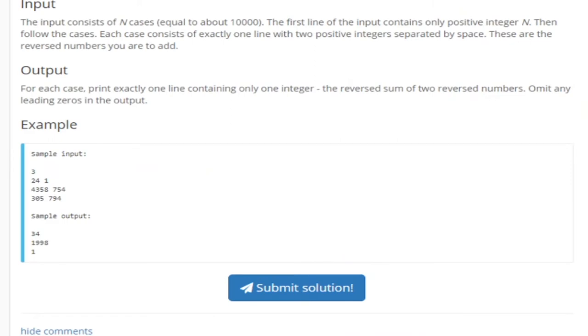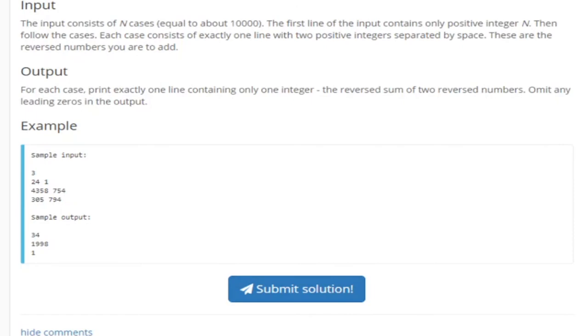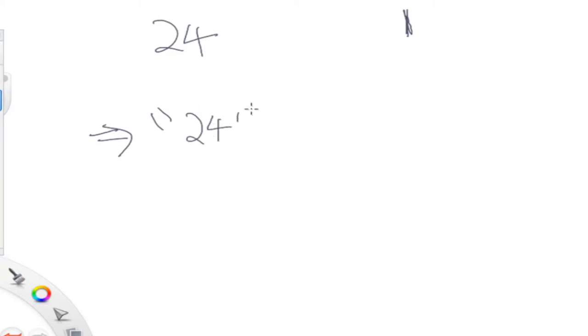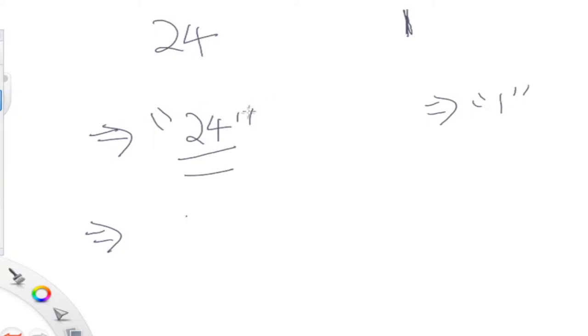So yeah, I hope you guys get the gist of the problem about how to reverse it. Now let's talk about how to solve this problem. One way is to convert the numbers into strings. If you convert 24 to a string, you have '24'. Convert 1 to a string, you get '1'. And then you could use some string manipulation function and loop to the middle and swap to the end.